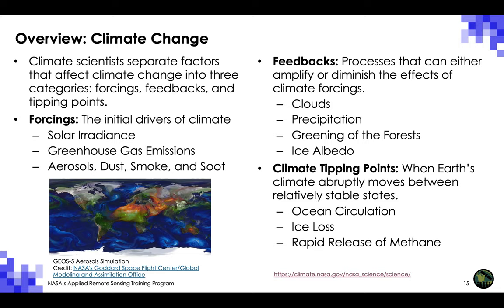Processes that can either amplify or diminish the effects of climate forcing are known as feedbacks. A feedback that increases an initial warming is called a positive feedback; one that reduces it is a negative feedback. Clouds have an enormous impact on Earth's climate, reflecting about one-third of the total amount of sunlight that hits the Earth's atmosphere back into space. Even small changes in cloud amount, location, and type can have large consequences on the climate system. Global climate models show that precipitation will generally increase due to the increased amount of water held in a warmer atmosphere, but not in all regions.